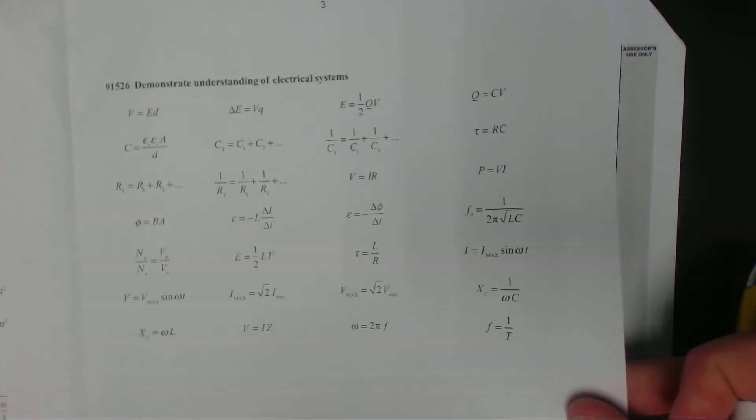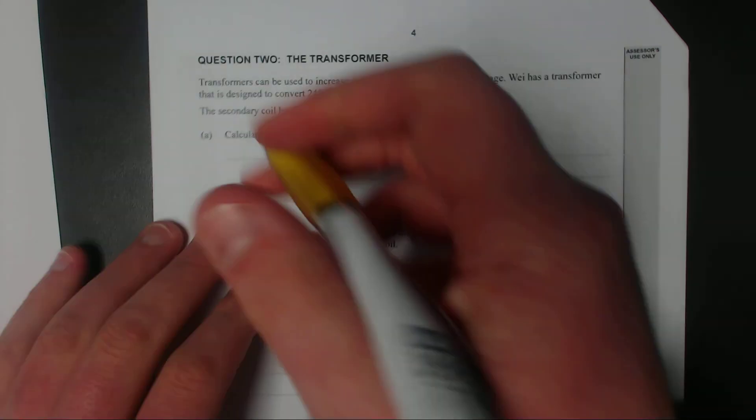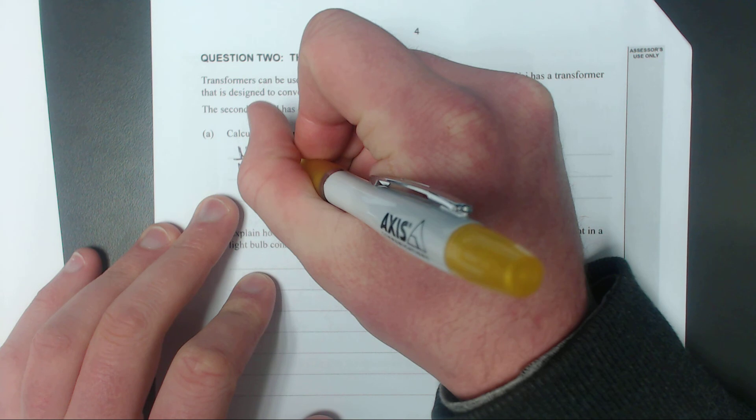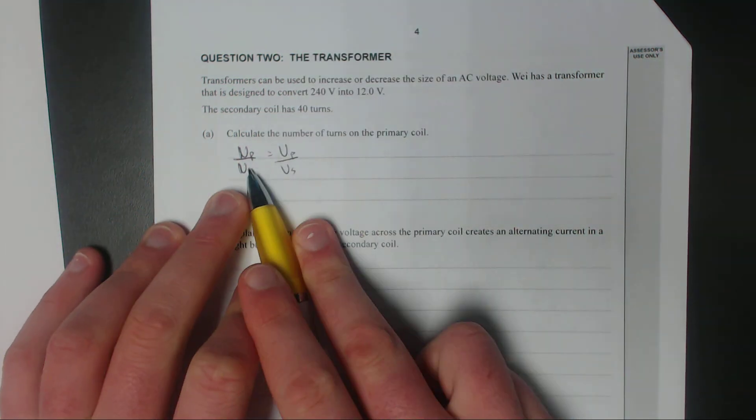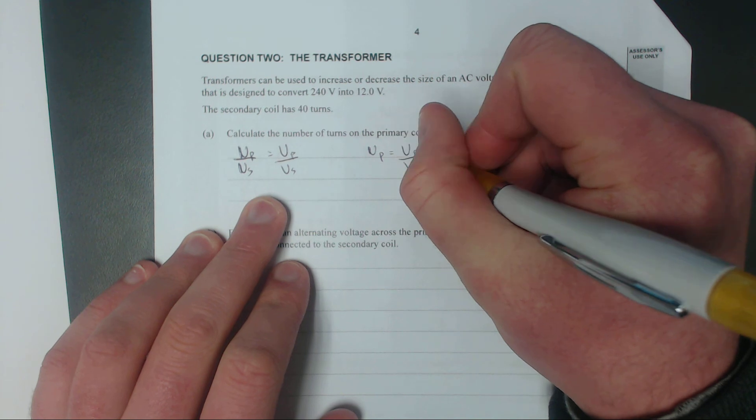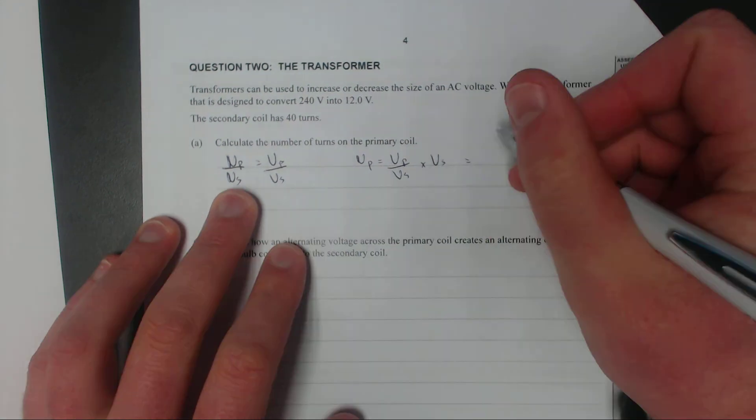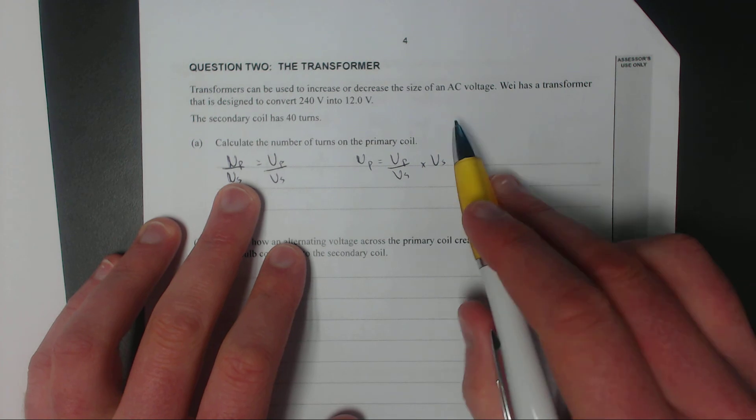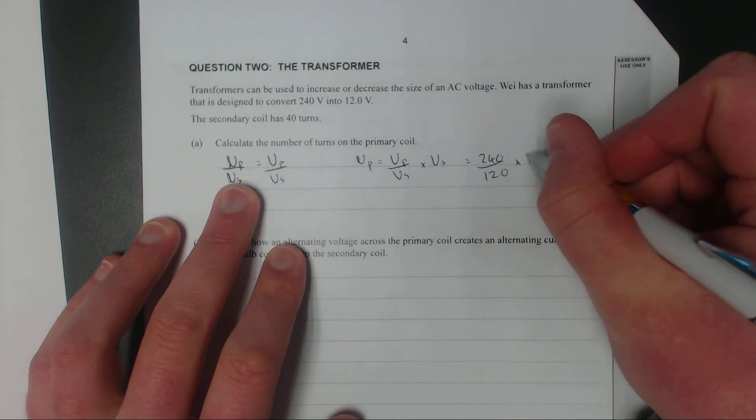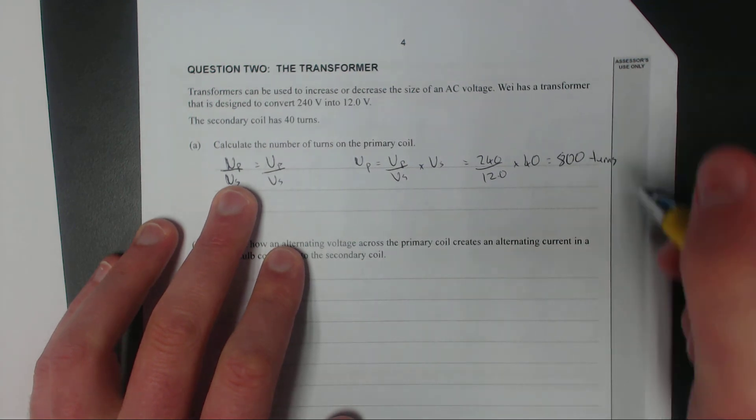So if you jump onto your formula sheet, we have Np divided by Ns equals Vp divided by Vs. So let's just write that down. We're trying to find Np. Np is equal to Vp over Vs times Ns. We're going to move this Ns over to the other side, times both sides by Ns. Now it's just simply plug and chug. Primary coil has 240 volts divided by 12 volts times 40 turns, and that's going to equal 800 turns.